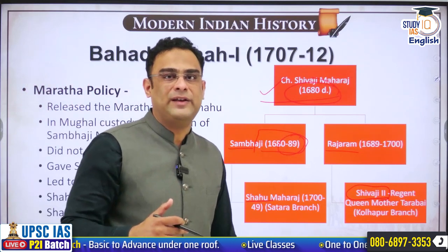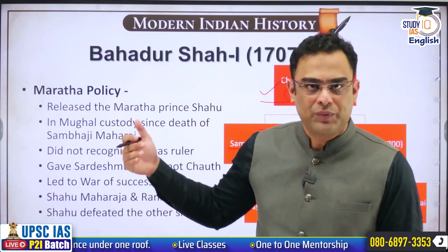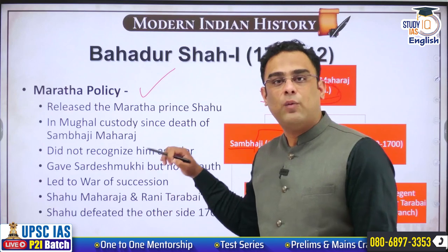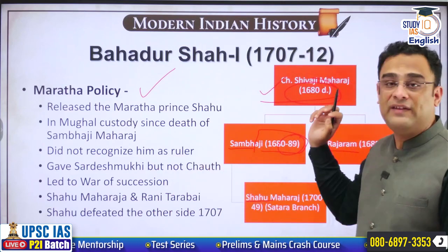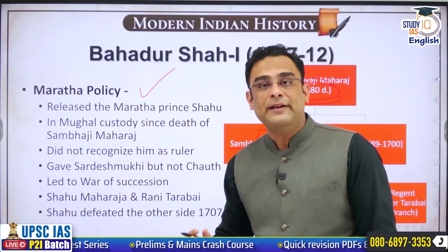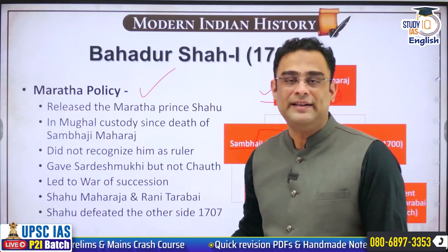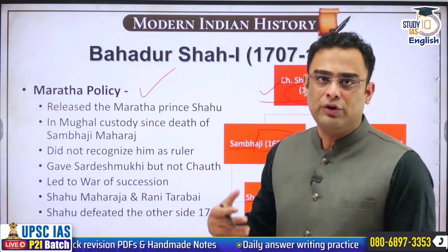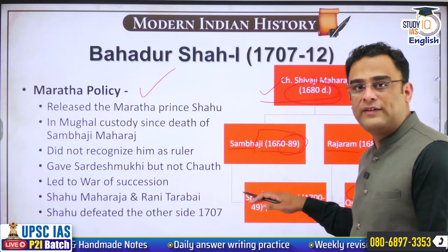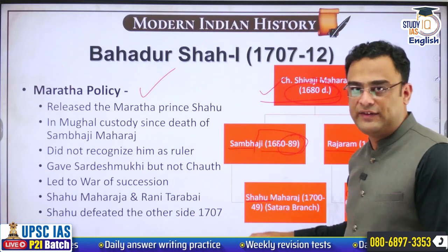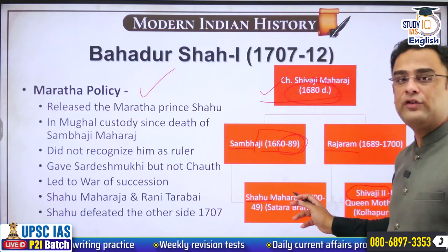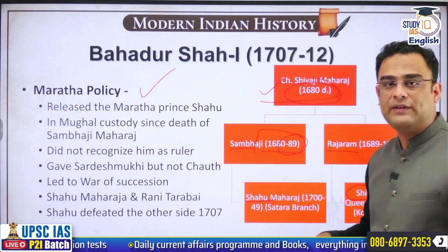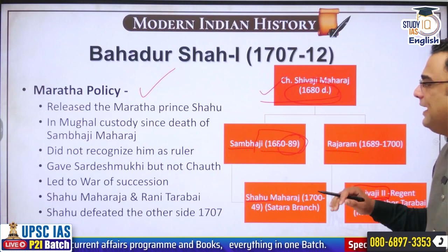With the death of Aurangzeb in 1707 and the rise of Bahadur Shah as Mughal emperor, the Maratha policy of the Mughals underwent a change. Mughals had realised the futility of continuing warfare in the Deccan — Aurangzeb had spent two and a half decades there from 1682 to 1707, died there, and was buried there without achieving anything significant. Therefore, Bahadur Shah resorted to political machinations, releasing Chhatrapati Shahu from custody and sending him to the Deccan. The whole idea was that two wings of the Maratha royal family would fight each other, leading to a civil war, relieving Mughal pressure in the Deccan.